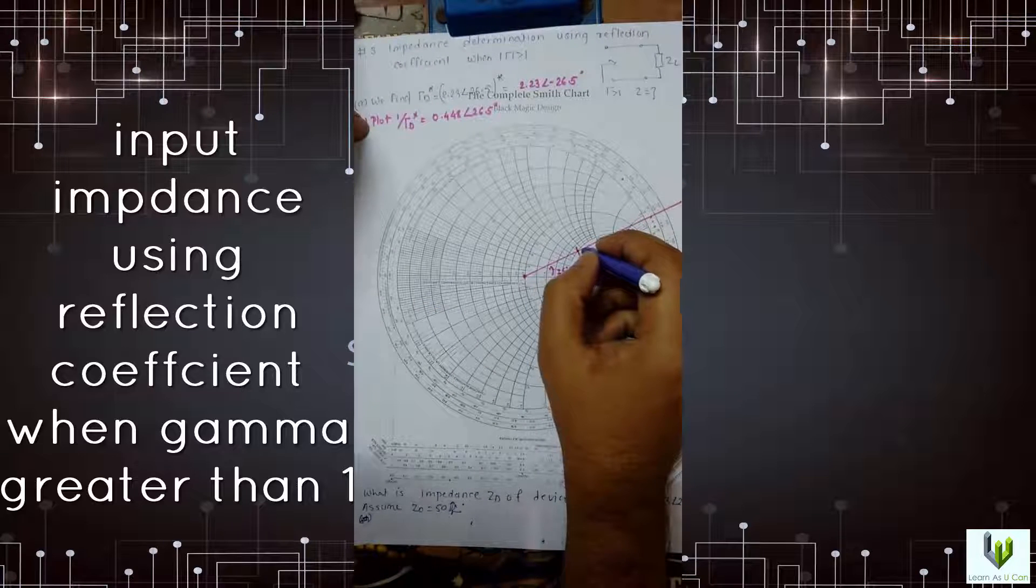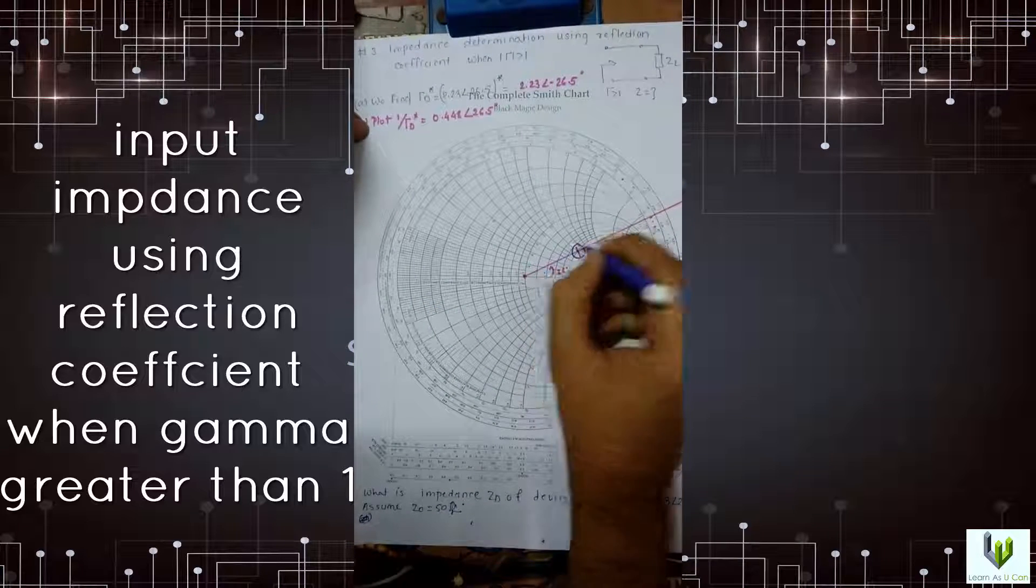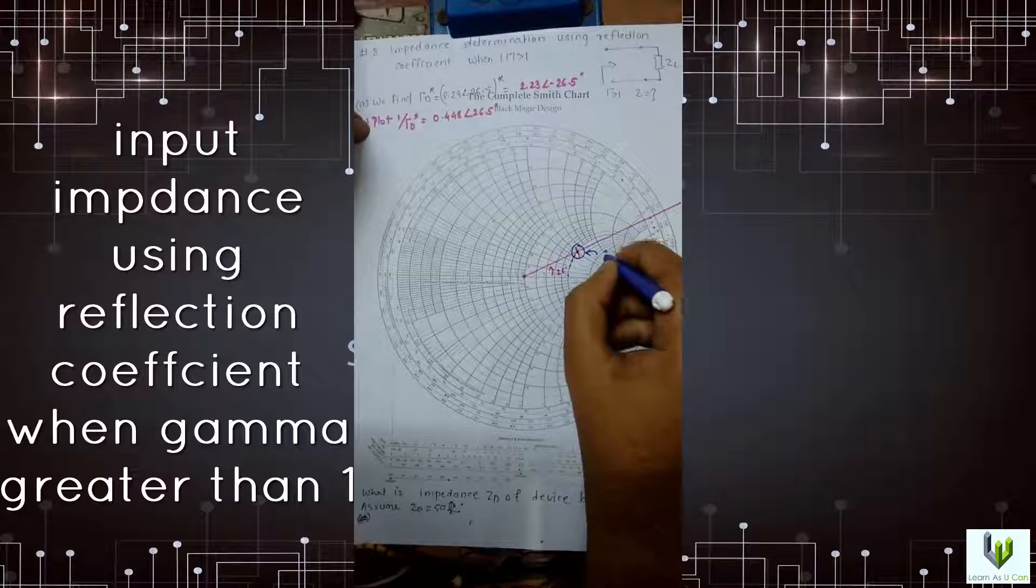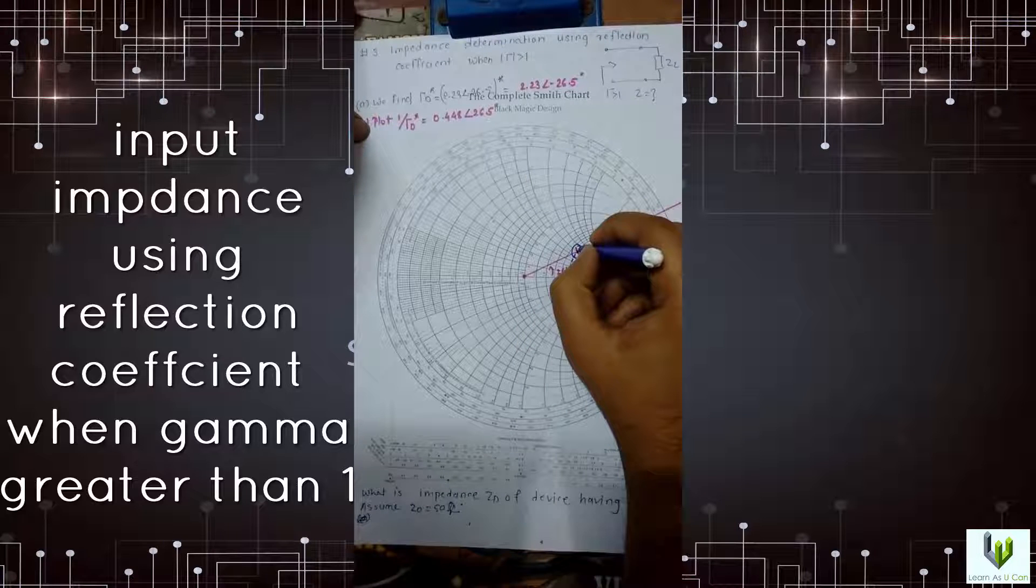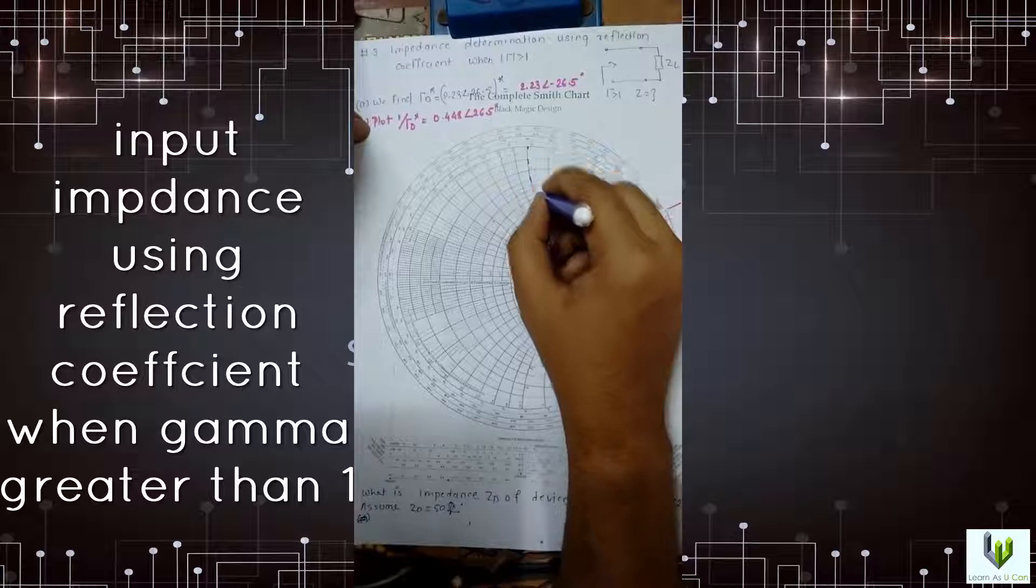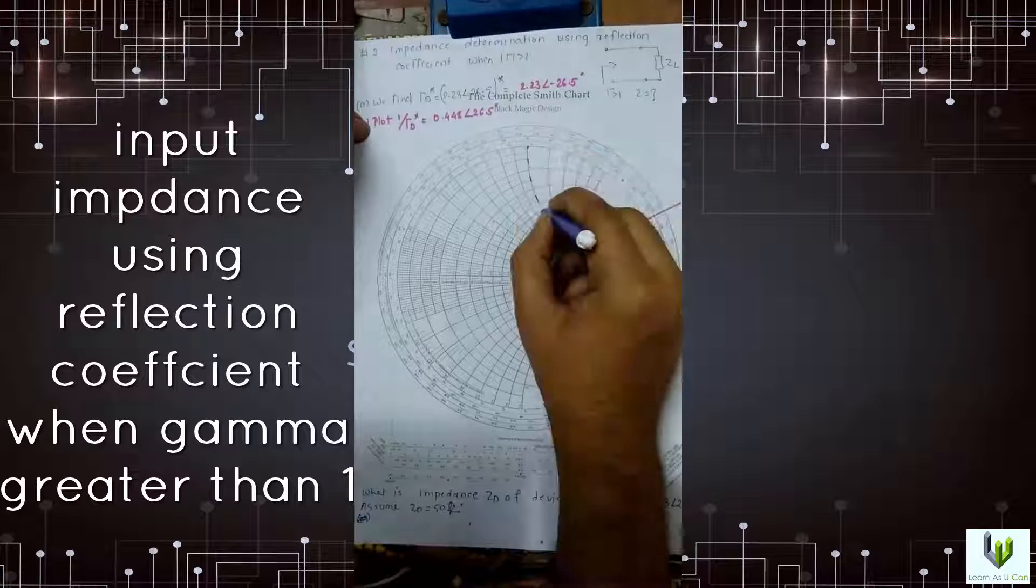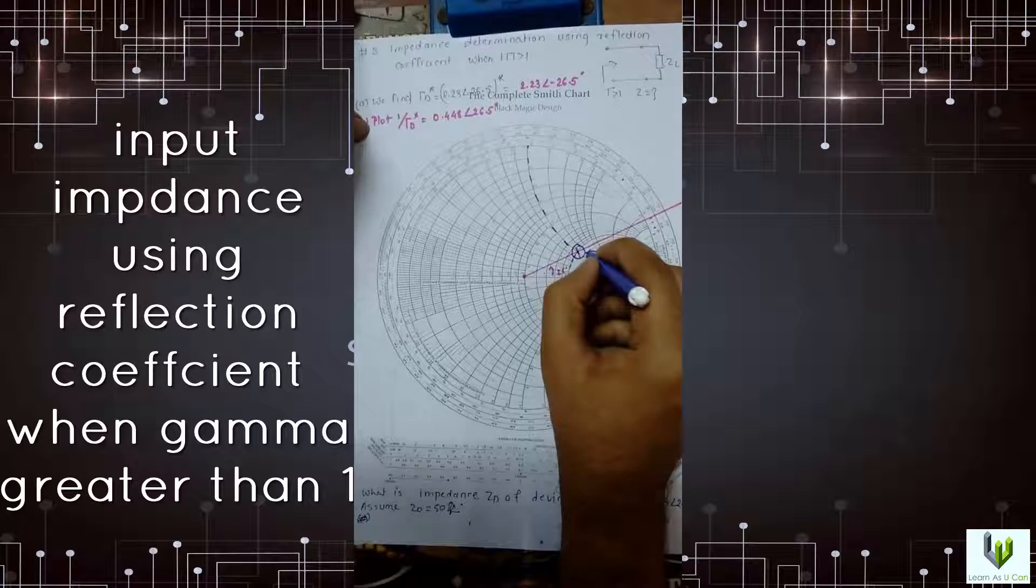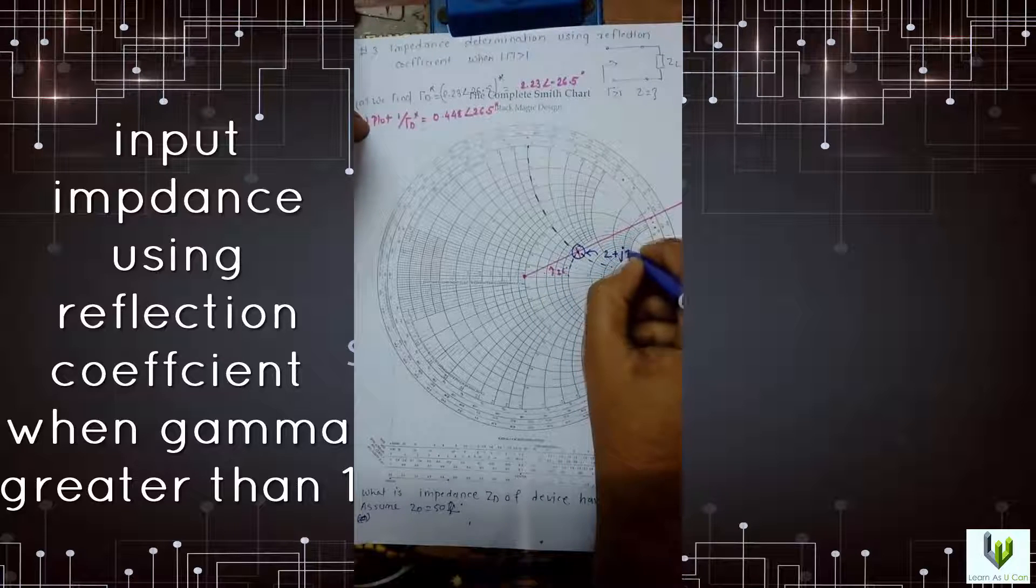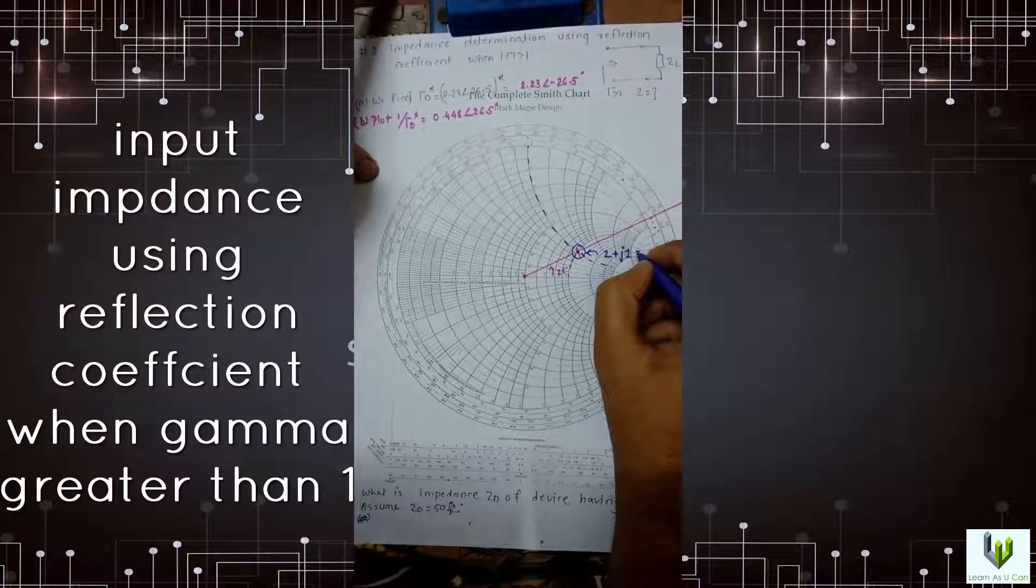Now obtain the Z value. It's 2, then this is plus j1. This is our Z dash T.